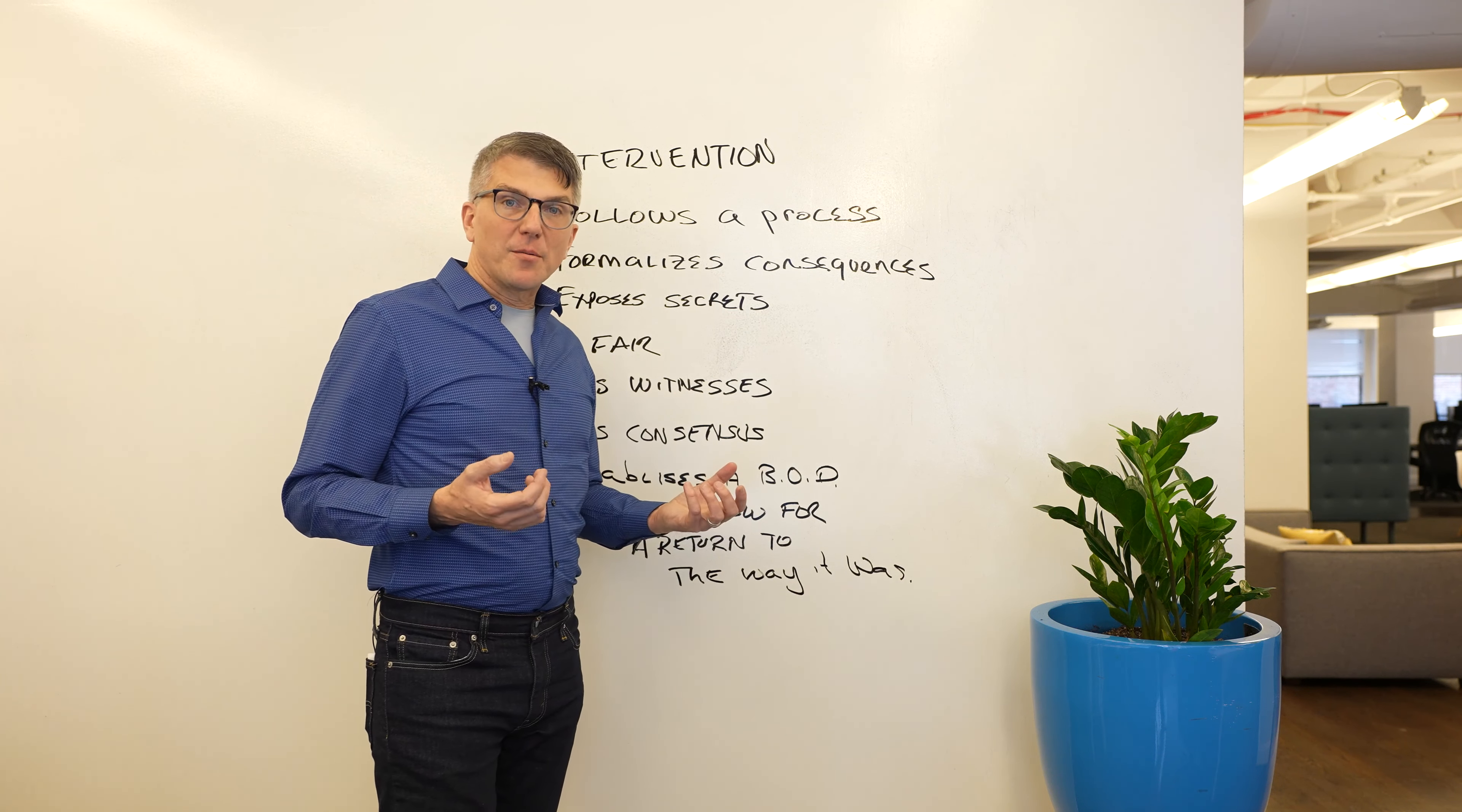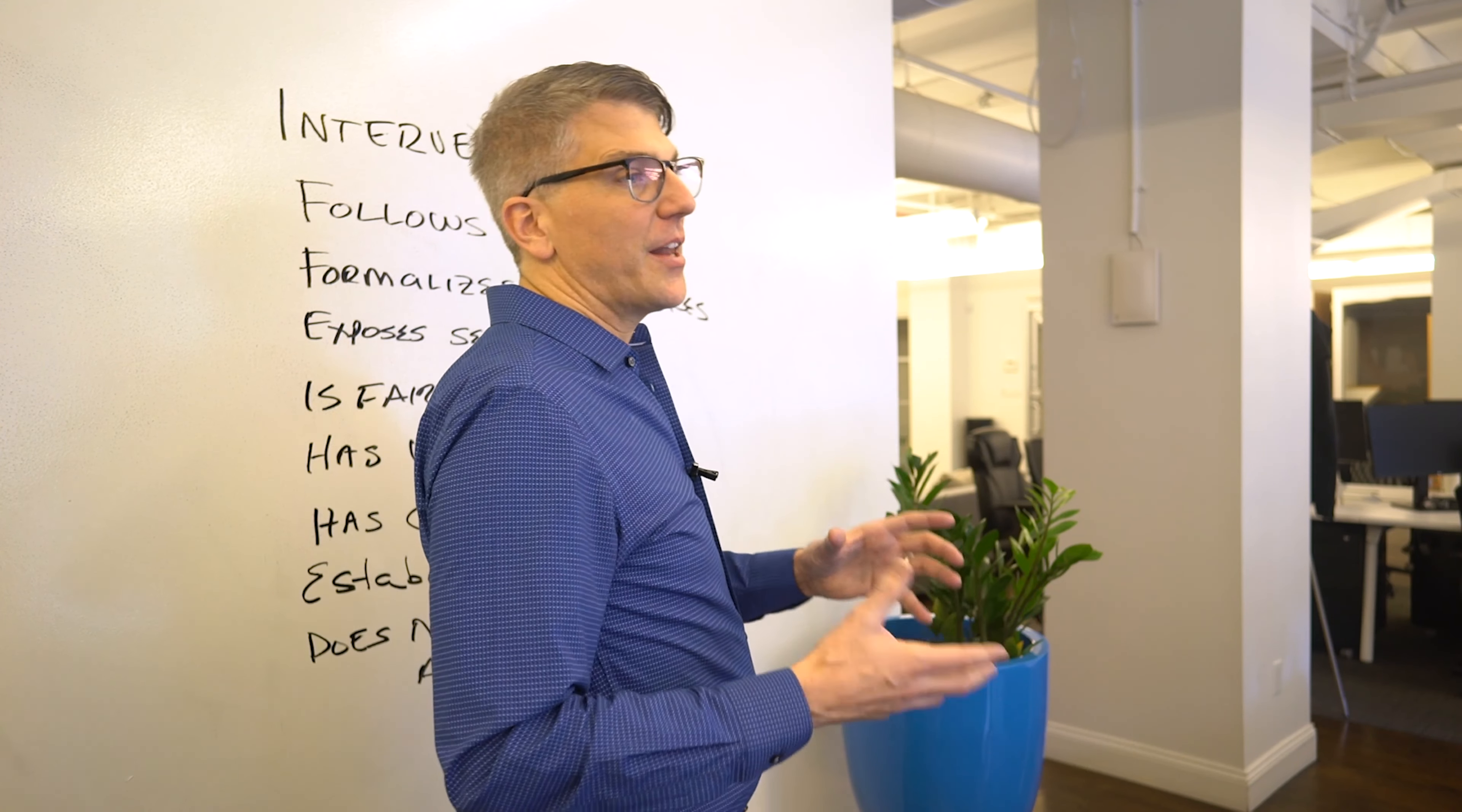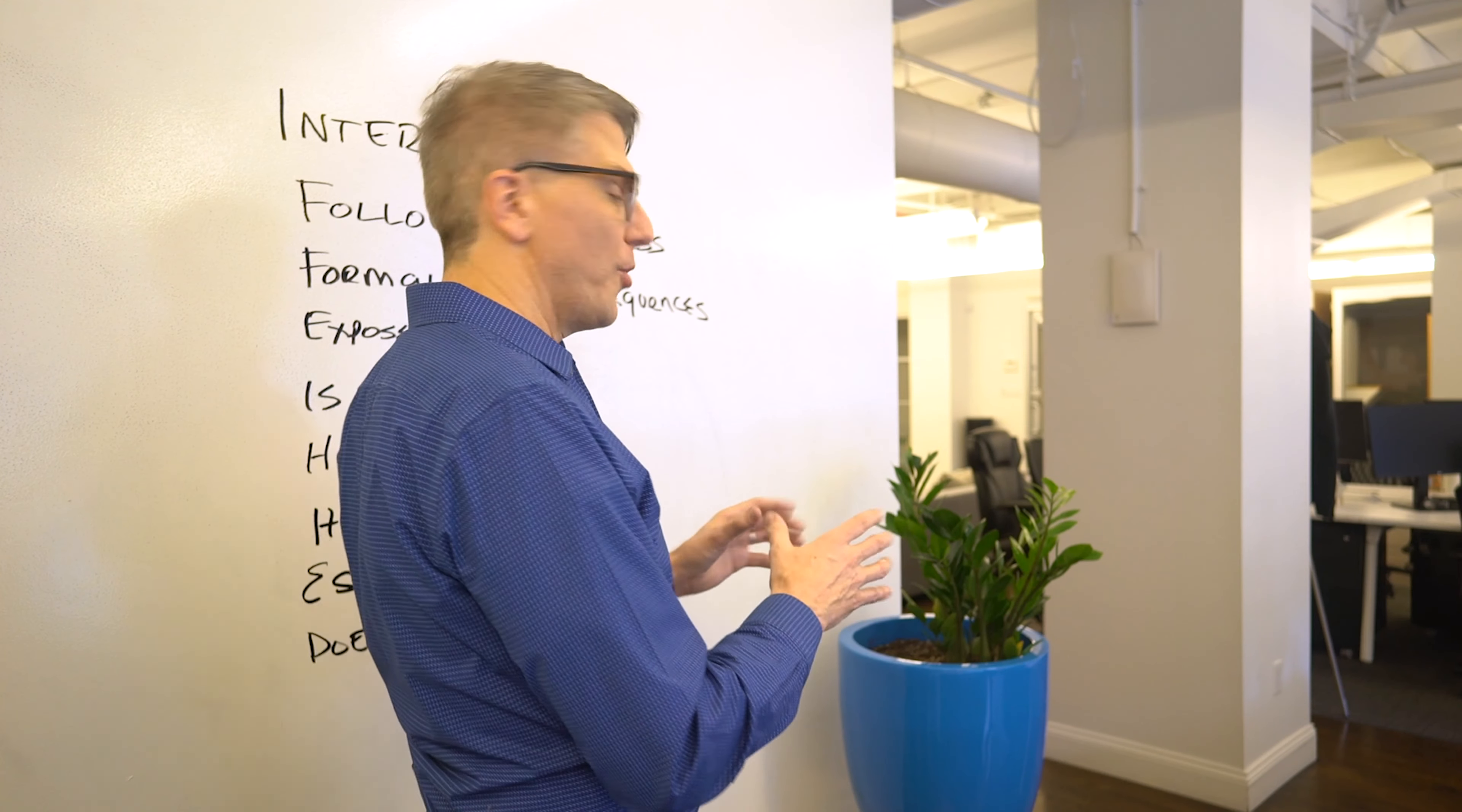Intervention establishes a board of directors. In an intervention, we're going to change who's managing addiction. Prior to intervention, the addiction is managing the family. The addiction is in charge. We change the manager. We're going to take members of the family and start managing addiction with a board of directors.